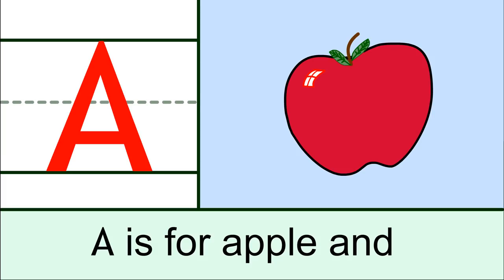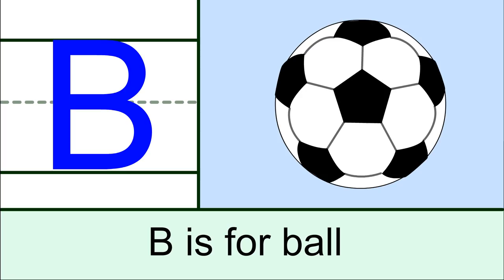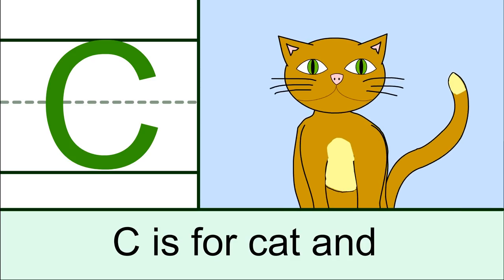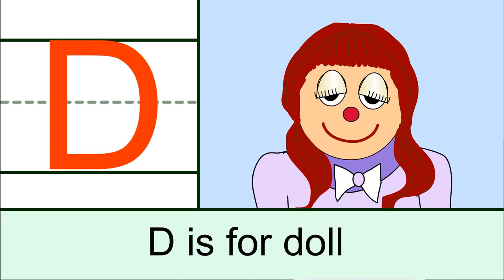A is for apple and B is for ball, C is for cat and D is for doll.